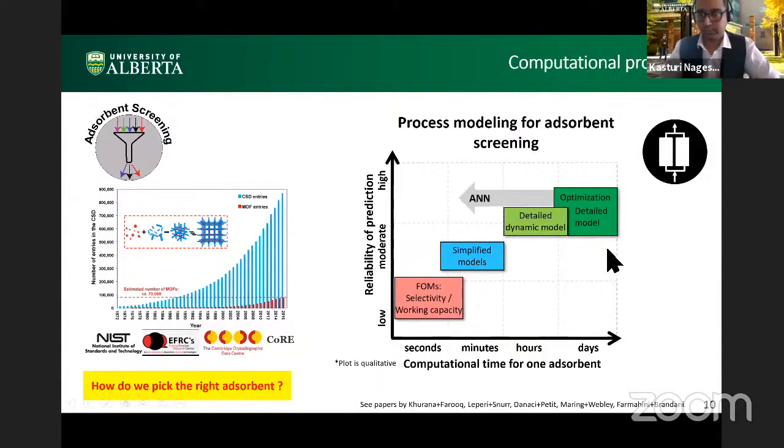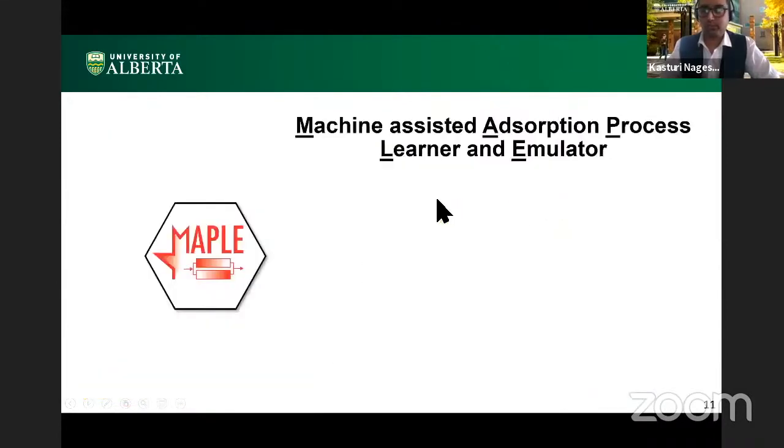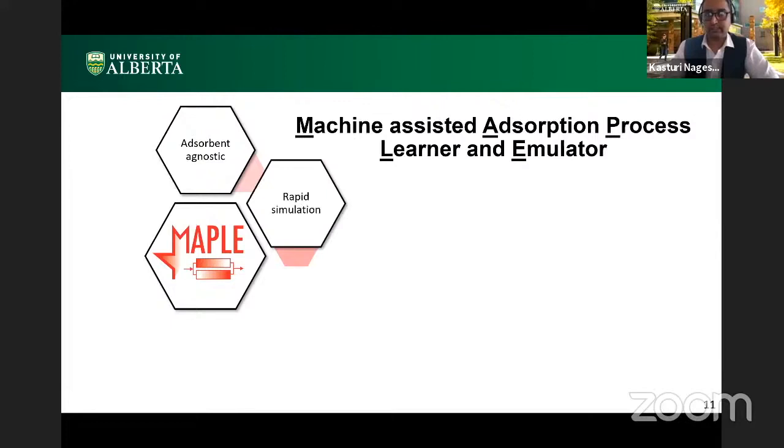So here I will introduce the framework that I've been presenting, which is a machine assisted adsorption process learner and emulator, which we call MAPLE, which is characterized by it's adsorbent agnostic as in, we can input any adsorbent and it doesn't have to be retrained. It can then give us the results without it trying to iteratively reach cyclic steady state. So the results are instantaneous. These models are very, they emulate the PSA process to the T so it can be used to optimize these processes. And then this model can screen materials. And as I'll show you later, these have been validated experimentally, and then we can use these models to explore the inverse problem or the adsorbent design problem.